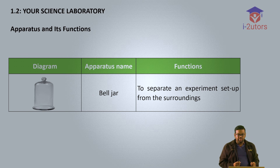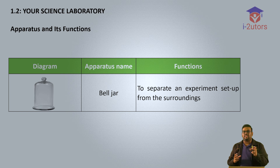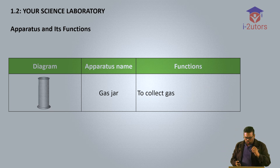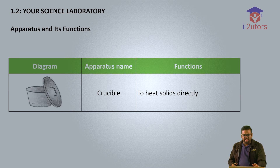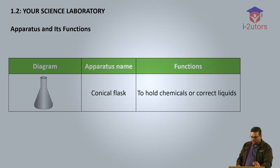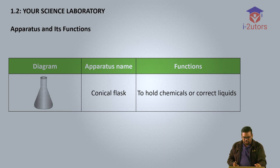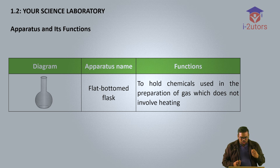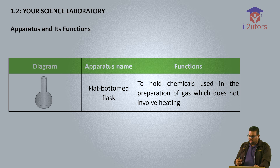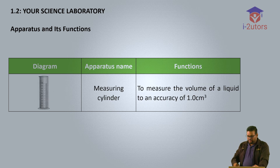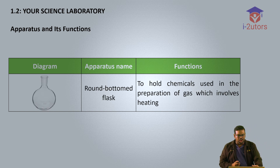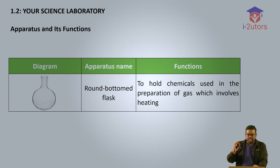Number 5, the bell jar — used to separate an experiment setup from the surroundings, so that oxygen or other gases don't interfere. Number 6, the glass jar — to collect gas. Number 7, the crucible — to heat a solid directly. Number 8, the conical flask — to hold chemicals or collect liquids. Number 9, the flat bottom flask — similar to the conical flask but with a round bottom — used to hold chemicals in preparation of gas which does not involve heating. Number 10, the measuring cylinder — to measure liquid with an accuracy of 1 centimeter cube.